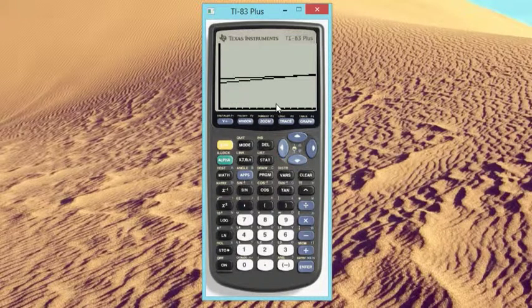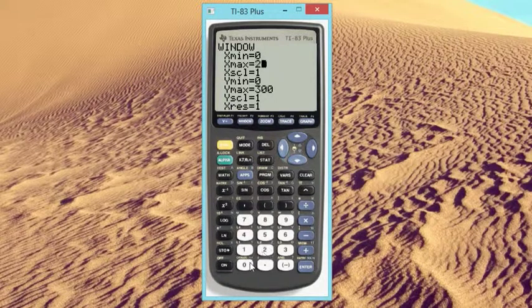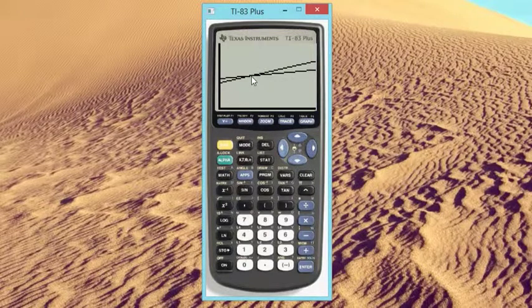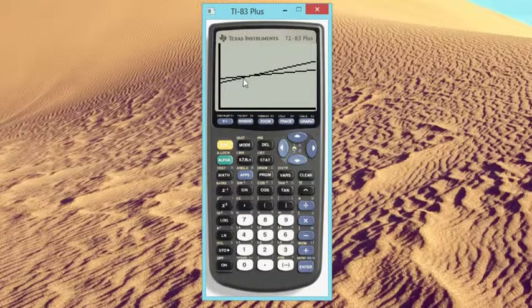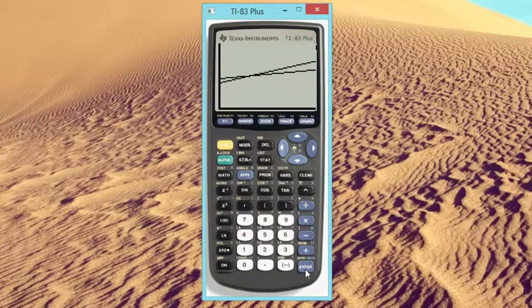That's pretty squished. How can we fix that? We can make our x max go further out, let's try 200. That's not bad. We want to find this intersection point - that's the point at which the younger tree equals the height of the older tree. Second, trace, 5, enter, enter, enter.